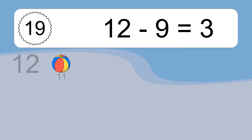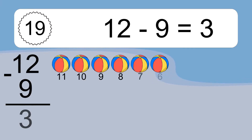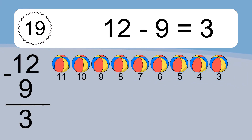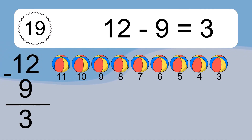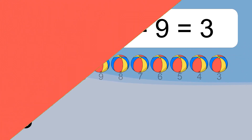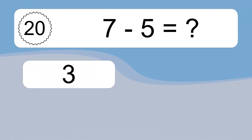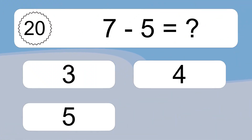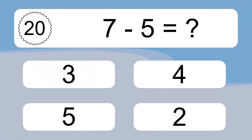12 minus 9 equals what? 12 minus 9 equals 3. Let's count it: 11, 10, 9, 8, 7, 6, 5, 4, 3.